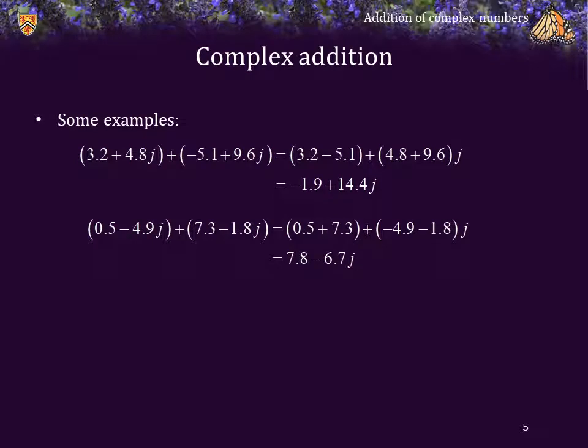Same here. We add the real components, 0.5 plus 7.3, and we add the imaginary components, negative 4.9 minus 1.8, and we multiply that result by j to get the sum.